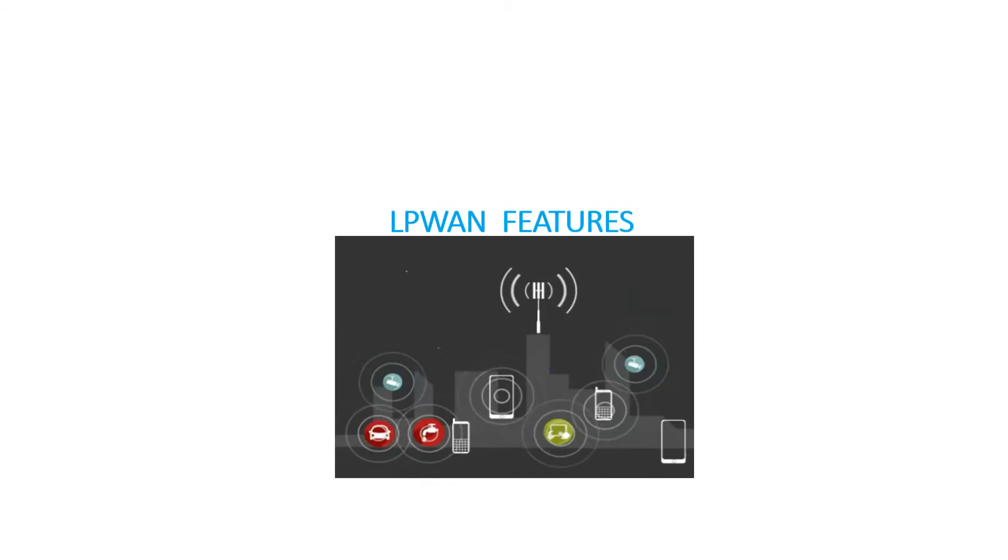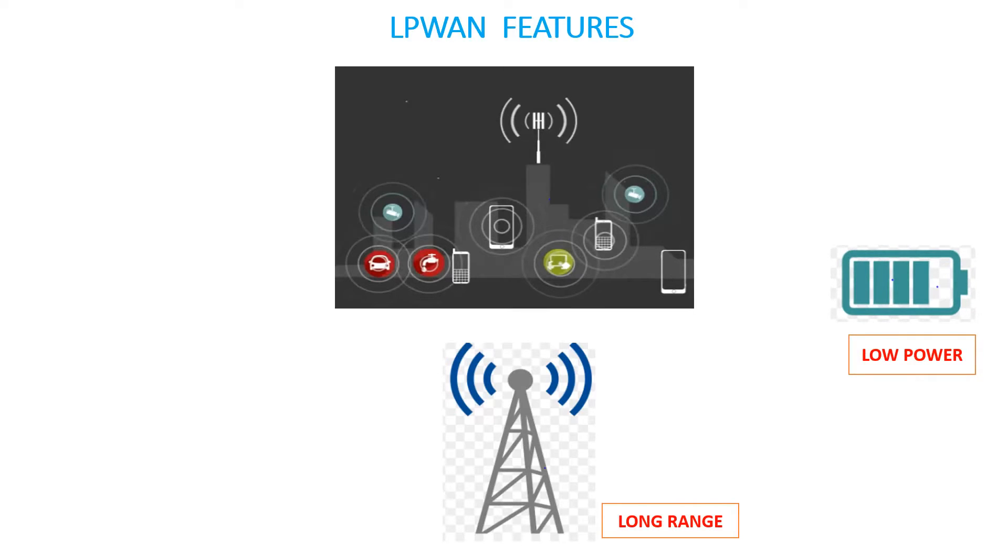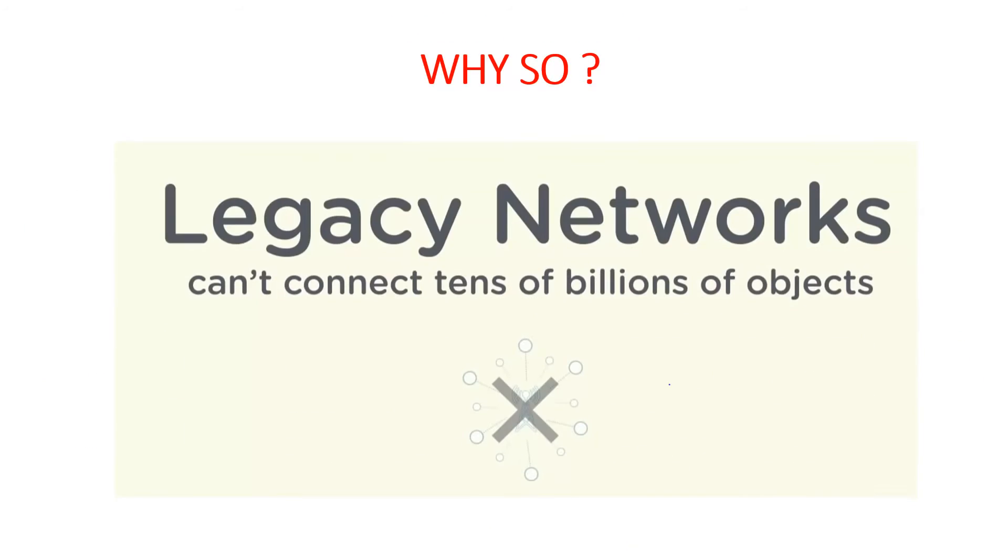We will start with LPWAN as the first topic. LPWAN stands for Low Power Wide Area Networks. They connect objects wirelessly over miles for several years under battery at a very low cost. Why so? Because legacy wireless network technologies, unlike LPWAN, have been designed for very different purposes than connecting tens of billions of objects.